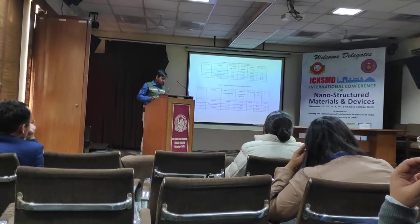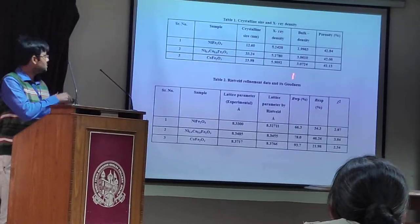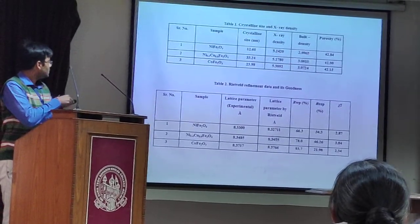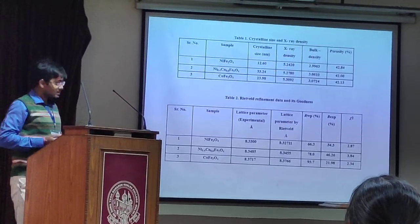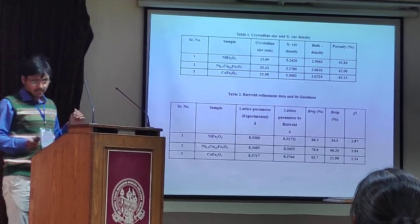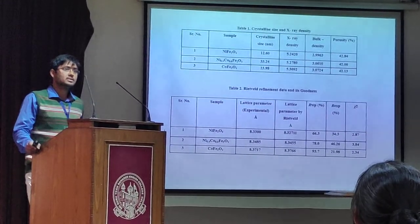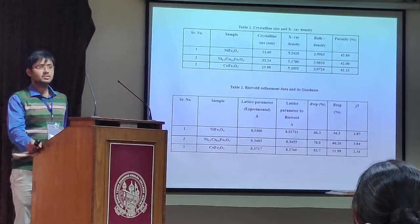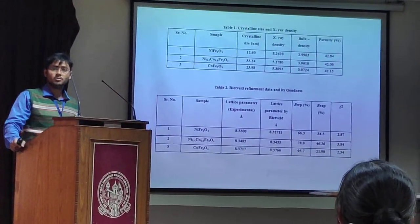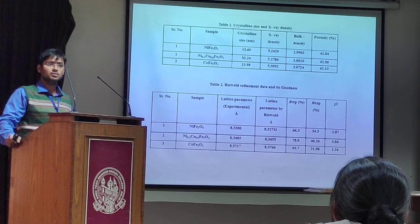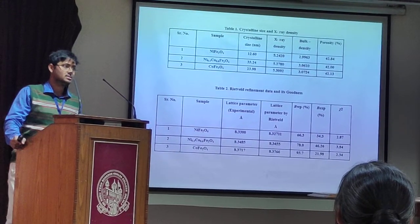Why does X-ray density increase? Because the atomic mass of cobalt is larger compared to nickel, so this follows an increasing order. The bulk density also increases in the same manner. The lattice parameter calculated experimentally using Rietveld refinement software also increases, because as the cobalt content increases, the lattice constant increases — since the ionic radius of cobalt is somewhat larger compared to nickel.